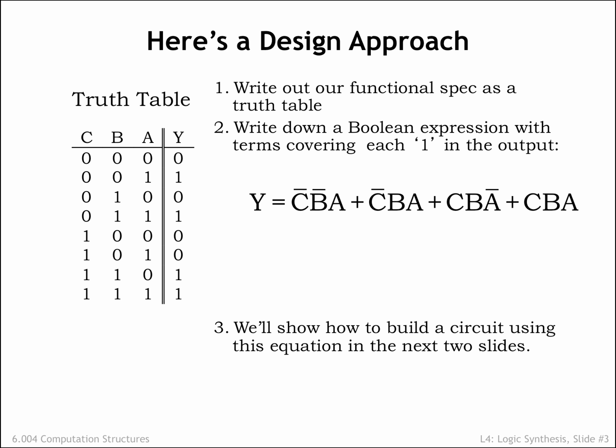The corresponding Boolean equation is thus the OR of 4 terms, where each term is a Boolean expression which evaluates to TRUE for a particular combination of inputs. Row 2 of the truth table corresponds to C equals 0, B equals 0, and A equals 1.